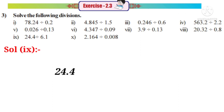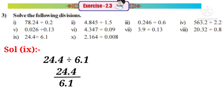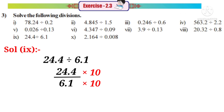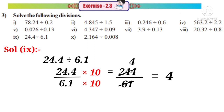Solution 9: 24.4 divided by 6.1, that means 24.4 by 6.1. Observe that there is only one decimal place in the denominator. So we have to multiply with a number which has only one zero after 1, that is by 10. On simplification by 61, the answer is 4.